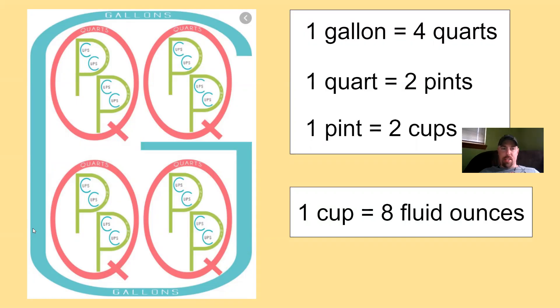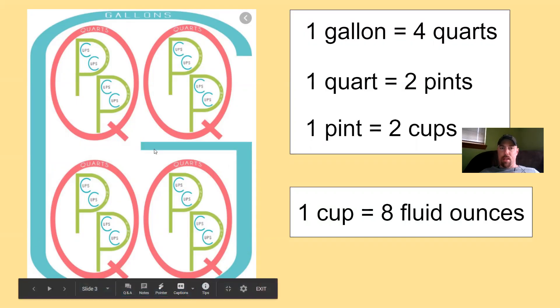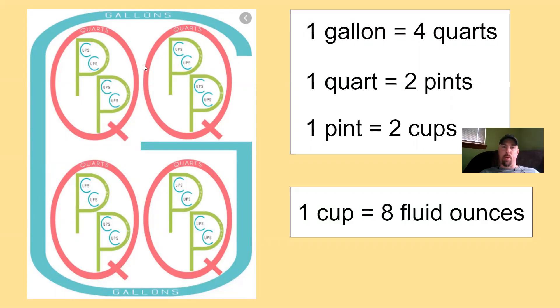So first thing you do is you draw a gigantic G. You see how big this thing has to be. That is King Gallon. He's on the outside. And inside the gallon are your four quarts. There's four queens. So you've got a big Q there, a Q, a Q, and a Q. So those are the four quarts.